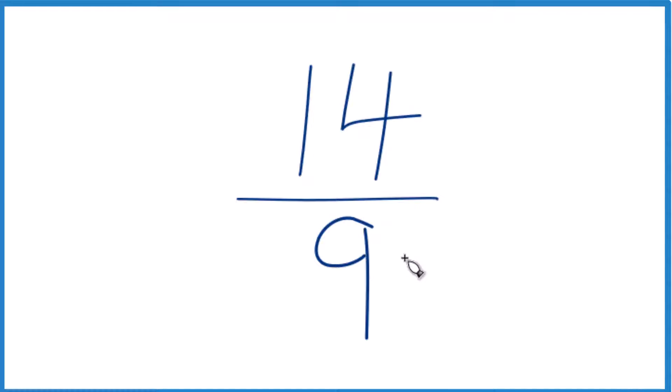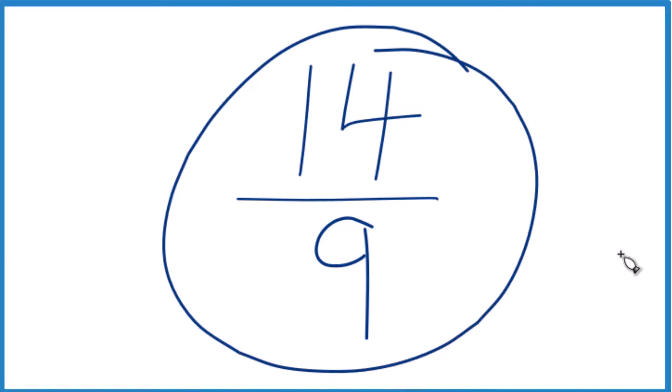For 14 and nine, I'm looking for something that goes evenly into 14 and nine. The only thing I see is one, and if I divide 14 by one and nine by one, I still get 14 ninths. So this is already simplified.